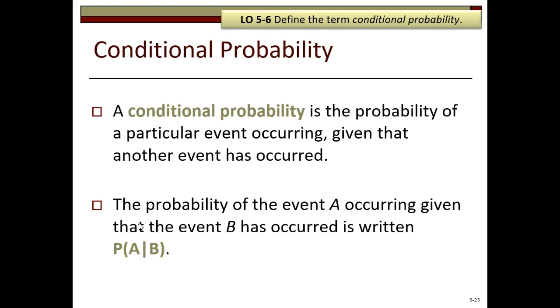A conditional probability is the probability of a particular event occurring, given that another event has occurred. So the probability of the event A occurring, given that the event B has occurred, is written as the probability of A slash B, which means the probability of A given B. This kind of probability is aptly called a conditional probability because the value of observing the second event, B, is conditional or dependent on the occurrence of the first event.